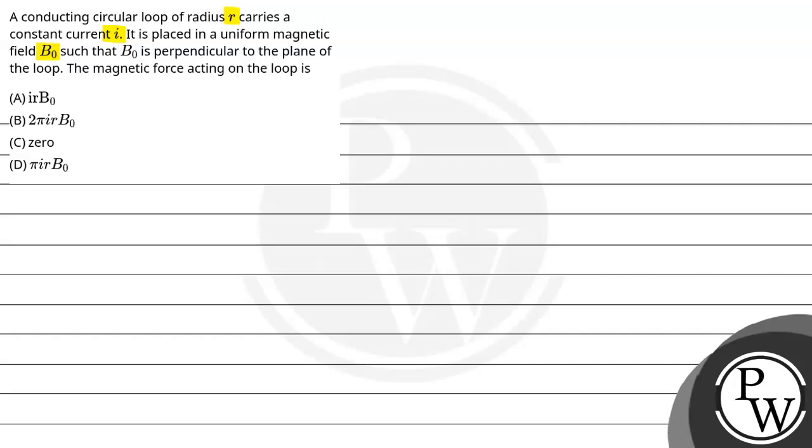The magnetic force acting on the loop will be. So key concept will be here. Key concept will be force on a current carrying conductor in a magnetic field.